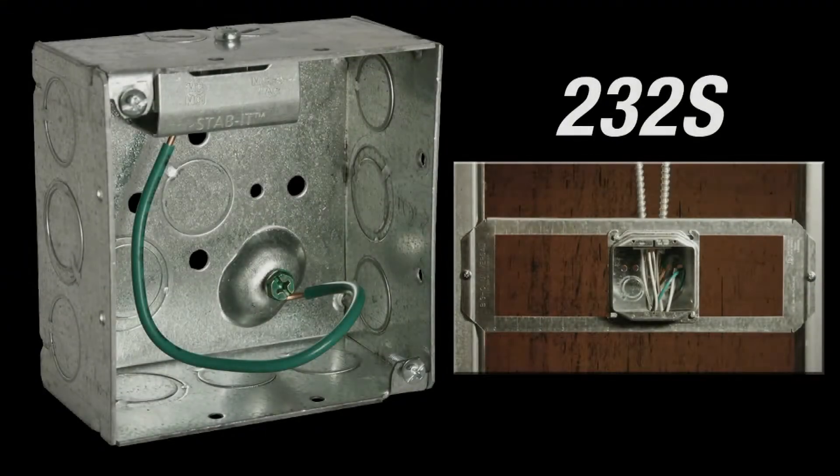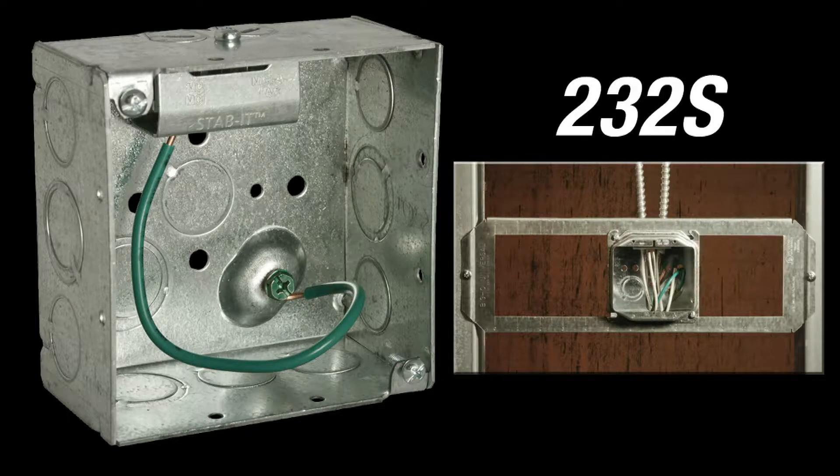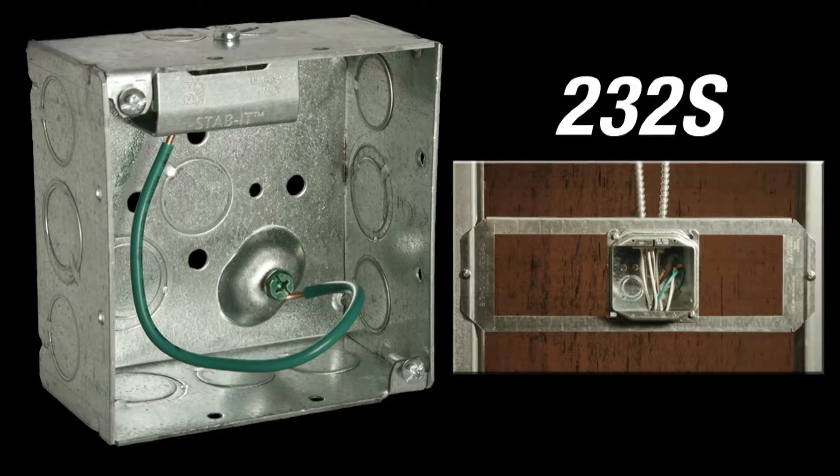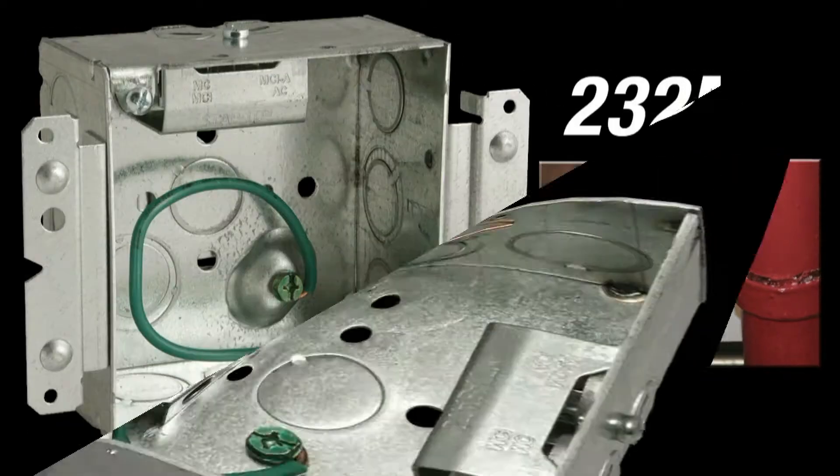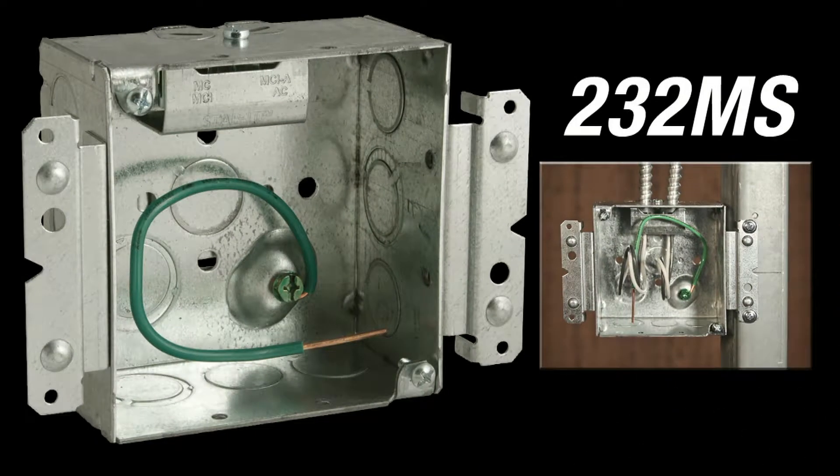Reiko series of STAB-IT boxes are available in seven different four-inch square box designs and three switch box designs to accommodate a variety of applications. The four-inch square STAB-IT boxes are all two and an eighth inch deep and available with one or two STAB-IT connectors.